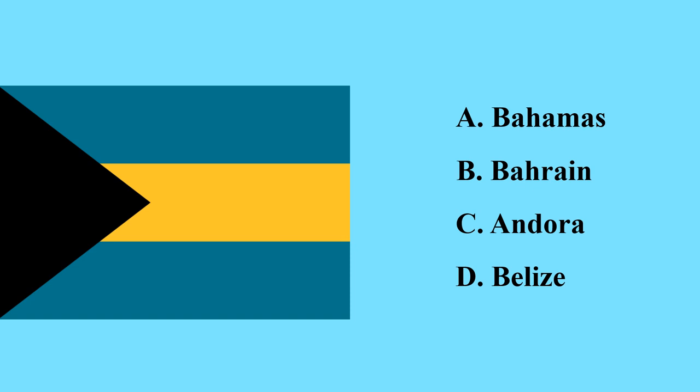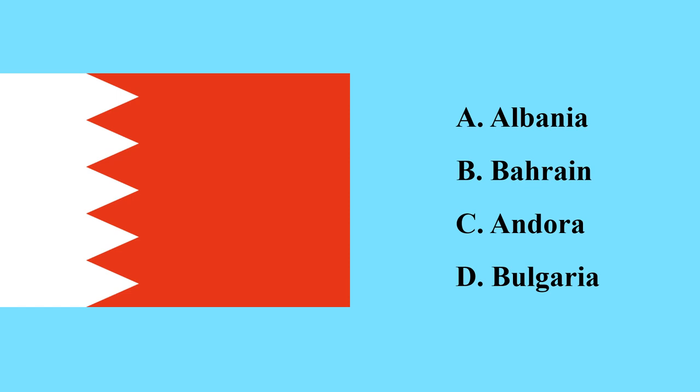This is a flag of which country? It's the Bahamas flag — it is an island country in the Caribbean region in North America. This is a flag of Bahrain; Bahrain is the smallest island country in Asia, found in the Persian Gulf, and it is an Arabian country.